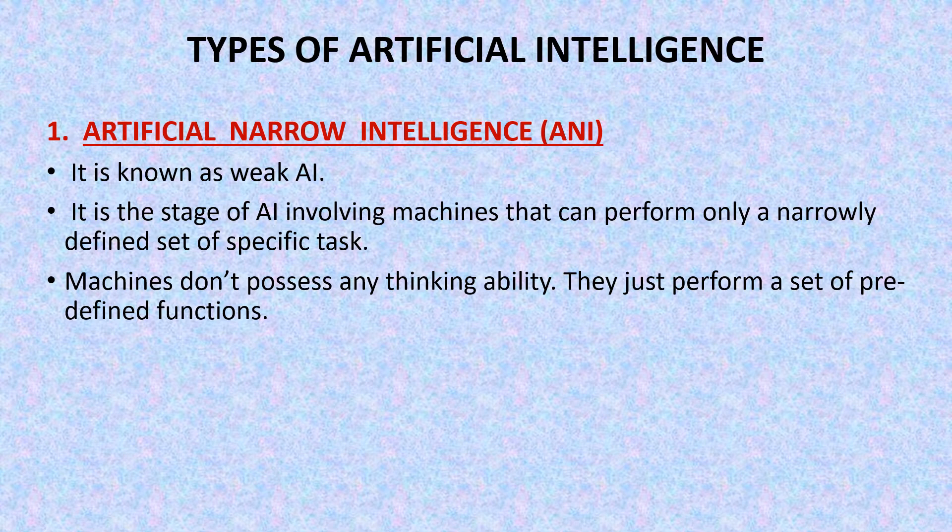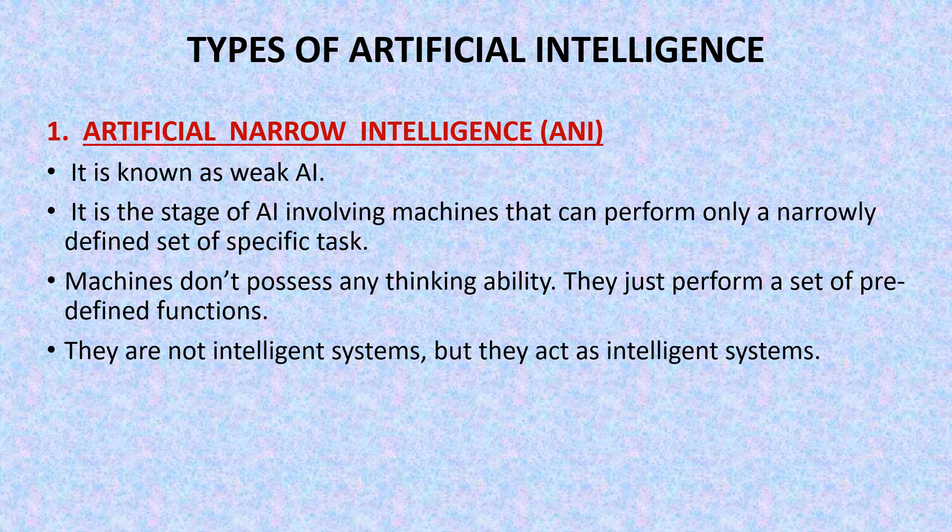Machines don't possess any thinking ability. They just perform a set of predefined functions. Machines without any data or programming cannot behave like humans, so they don't possess any thinking ability just like humans. They can perform only predefined functions for which they are programmed. They are not intelligent systems but they act as intelligent systems. These are all the reasons why we say that artificial narrow intelligence is weak AI.